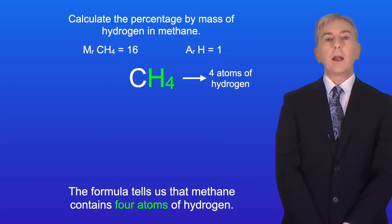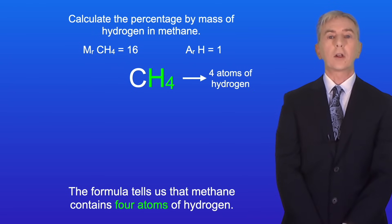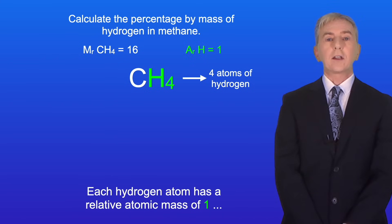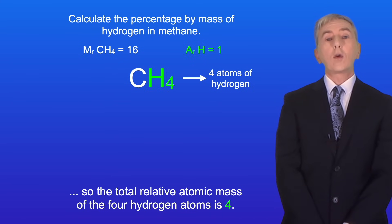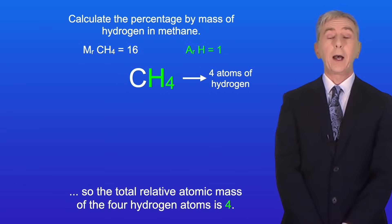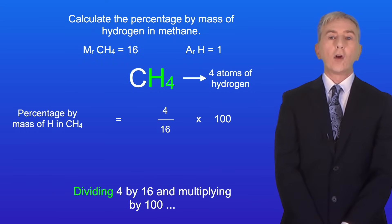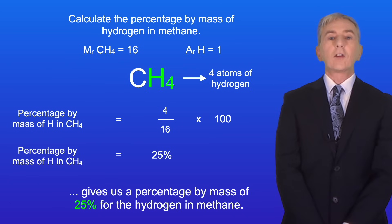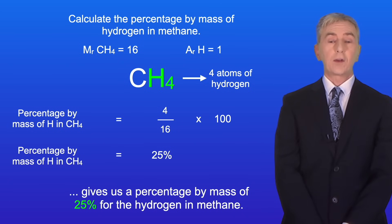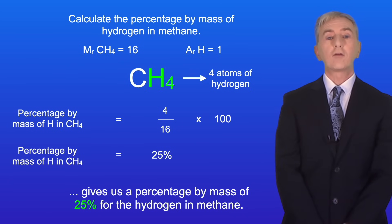The formula tells us that methane contains 4 atoms of hydrogen. Each hydrogen atom has a relative atomic mass of 1, so the total relative atomic mass of the 4 hydrogen atoms is 4. Methane has a relative formula mass of 16. Dividing 4 by 16 and multiplying by 100 gives us a percentage by mass of 25% for the hydrogen in methane.